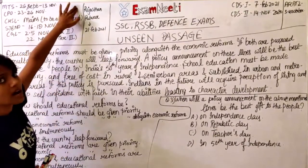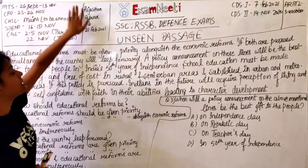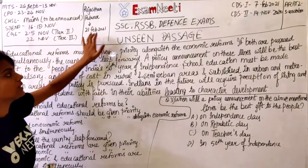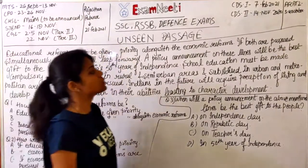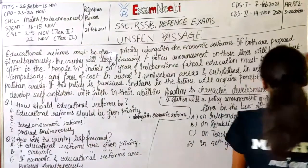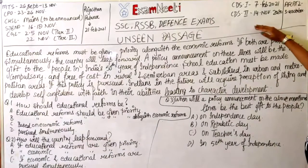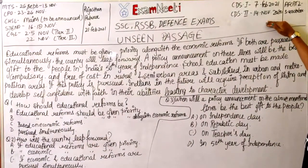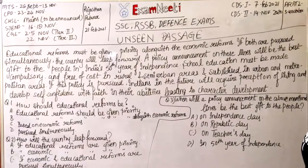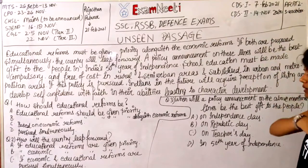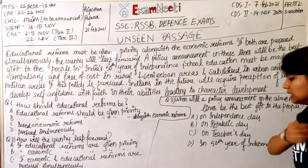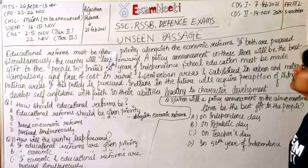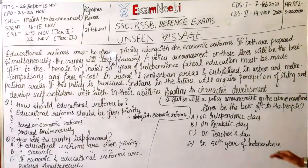Rajasthan ki baat karein toh RSSP ke exam ki date hai 21st February 2021. CDS 1: 7th February 2021. CDS 2: 14th November 2020 — abhi jo current month hai, isma CDS 2 ka exam hai. NDA: 3rd to 4th October 2020. Chalye, to ye saari badi dates aapne mind mein rakhle ga.